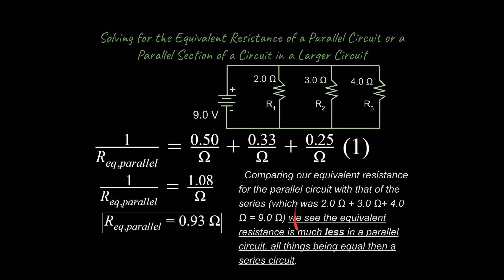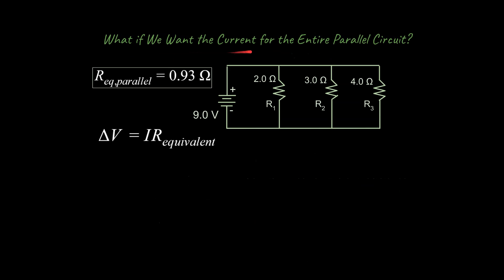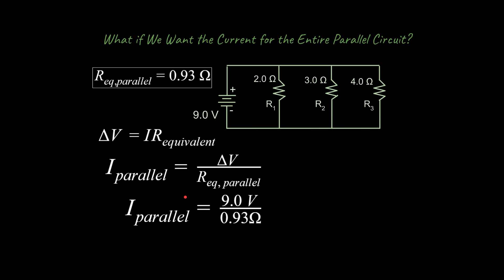Comparing the equivalent resistance in series versus parallel: in series we got much higher resistance, and in parallel we get much less. Before we had 9 ohms; now we have 0.93 ohms — a huge difference. We can generalize: equivalent resistance is much less in a parallel circuit than in a series circuit, all things being equal. Once we have the equivalent parallel resistance, we can isolate for the parallel current using Ohm's Law and solve, ending up with 9.7 amps.